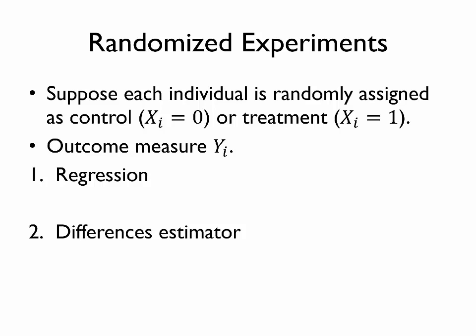One way that we might think to estimate the effect of this treatment, the effect of the vaccine, would be to use a regression approach. For example, we could regress that outcome on this dummy variable for the treatment, and then we would expect that the estimated beta coefficient, the estimated coefficient on X, should tell us the treatment effect.